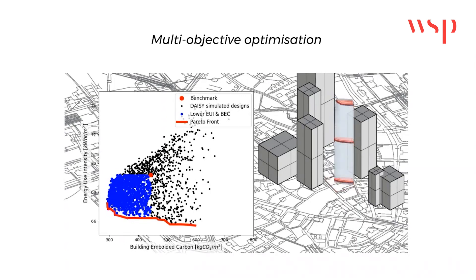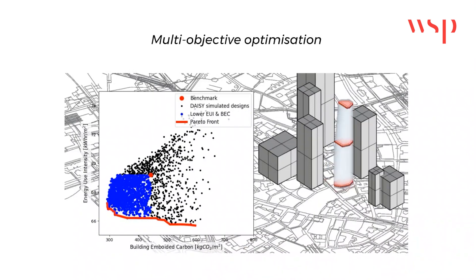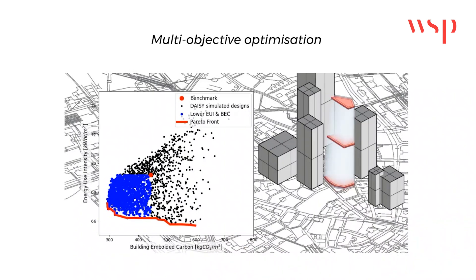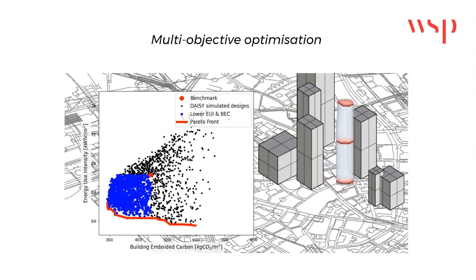Lastly, the red line represents the Pareto front, where the most optimal solutions exist. Along this front, there will always be a trade-off between improving one objective at the expense of another. This provides an opportunity for creativity in choosing the preferred design or remaining grounded in evidence-based thinking.